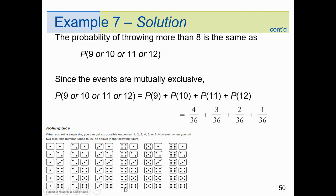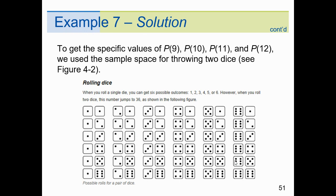The ways to roll a 10 are: four-six, five-five, or six-four — three ways. For 11: five-six or six-five — two ways. For 12: six-six — one way. All of these are mutually exclusive since only one sum can occur on a single throw of two dice. So P(sum > 8) = P(9) + P(10) + P(11) + P(12) = 4/36 + 3/36 + 2/36 + 1/36 = 10/36, which simplifies to 5/18.